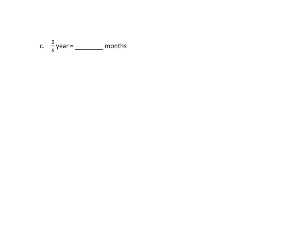Let's look at the first one. We can solve these either using mathematical equations or a tape diagram — you have a choice. I'm going to do both. So we'll make a tape diagram, and we have one whole year. We're going to partition that into six equal parts, and we want five out of those six.